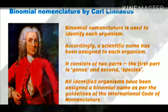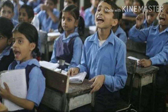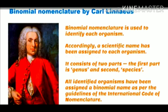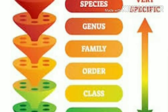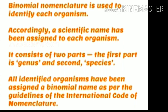Just imagine there are four students with the name Kabir or Kiran in a classroom. If you are talking about any one of them, how would you ensure that others know which one you are talking about without any confusion? We would tell the full name — the first name and the last name. This is similar to binomial nomenclature. Binomial nomenclature is used to identify each organism. A scientific name has been assigned to each organism, and it consists of two parts: the first part is genus and the second is species. All identified organisms have been assigned a binomial name as per the guidelines of the International Code of Nomenclature.